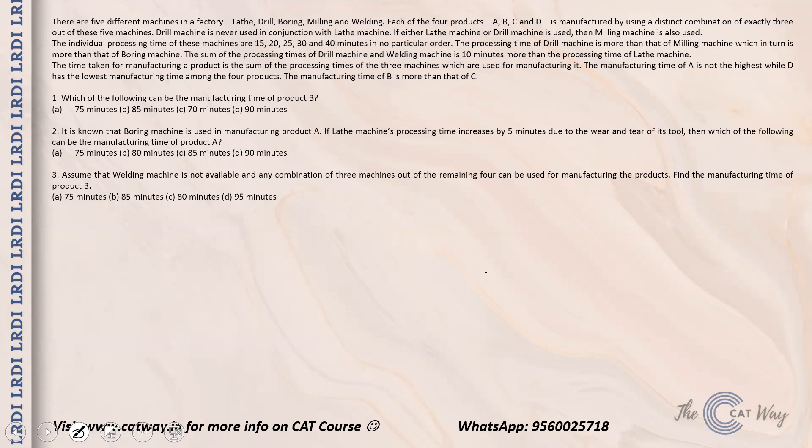The time taken for manufacturing a product is the sum of the processing times of the three machines used. The manufacturing time of A is not the highest, while D has the lowest manufacturing time among the four products. The manufacturing time of B is more than that of C.